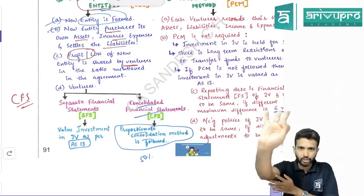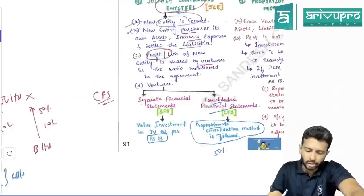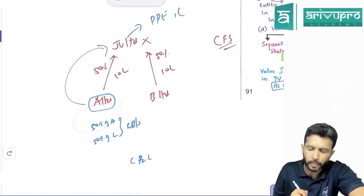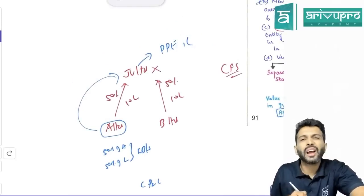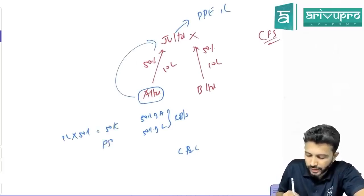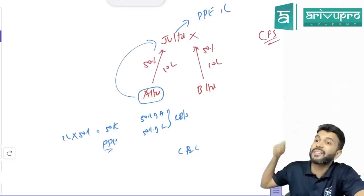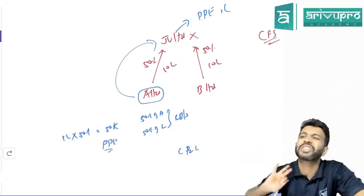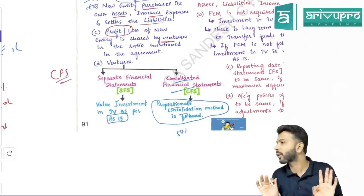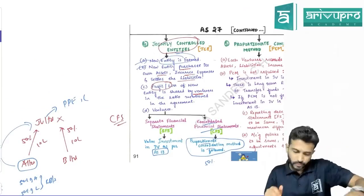The proportionate consolidation method means: don't add 100 percent of assets and liabilities — add only your share, which could be 50 percent, 40 percent, or whatever the agreement says. For example, if JV Limited has PPE of 1 lakh, A Limited with 50 percent share will show only 50,000 as PPE in its consolidated financial statements, alongside its own PPE. That's all there is to AS 27.